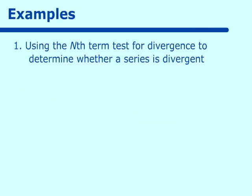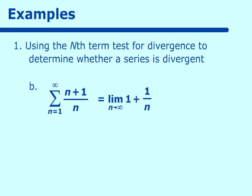How about the sum when n equals 1 to infinity of (n plus 1) over n? We can rewrite this as 1 plus 1 over n. As n approaches infinity, the 1 over n becomes close to 0, and we're left with an answer of 1. The nth term test says that if the limit approaches a number other than 0, the series is divergent. So this is divergent.